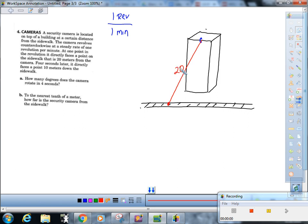Okay, four seconds later it directly faces a point that is 10 meters down the sidewalk. Now the four seconds later is going to give us that angle right there. Okay, so we've got to figure out how many degrees does this camera span or swoop in four seconds.